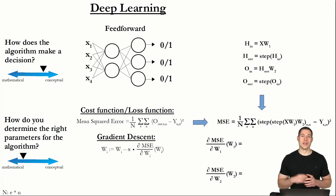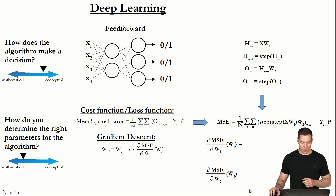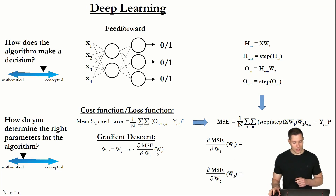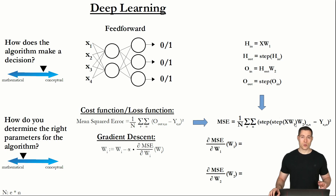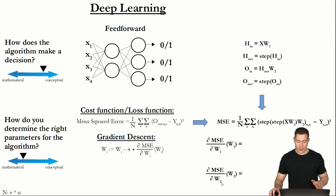Welcome to part 8 of the basics of the neural network series. In the previous video we left off with the observation that if we want to apply the gradient descent algorithm to our cost function, then we need to determine the partial derivative of the mean squared error with respect to weight matrix 1 and with respect to weight matrix 2. And this is what we want to do now.